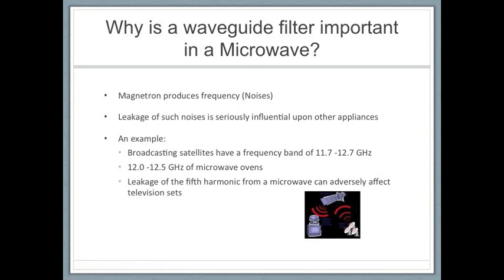For example, broadcasting satellites have frequency bandwidths ranging from 11.7 GHz to 12.7 GHz, while microwave ovens have a frequency of 12.0 to 12.5 GHz. The broadcasting satellite frequencies coincide with the 5th harmonic, and therefore leakage of the 5th harmonic from a microwave oven can adversely affect television sets tuned to satellite broadcasting stations.